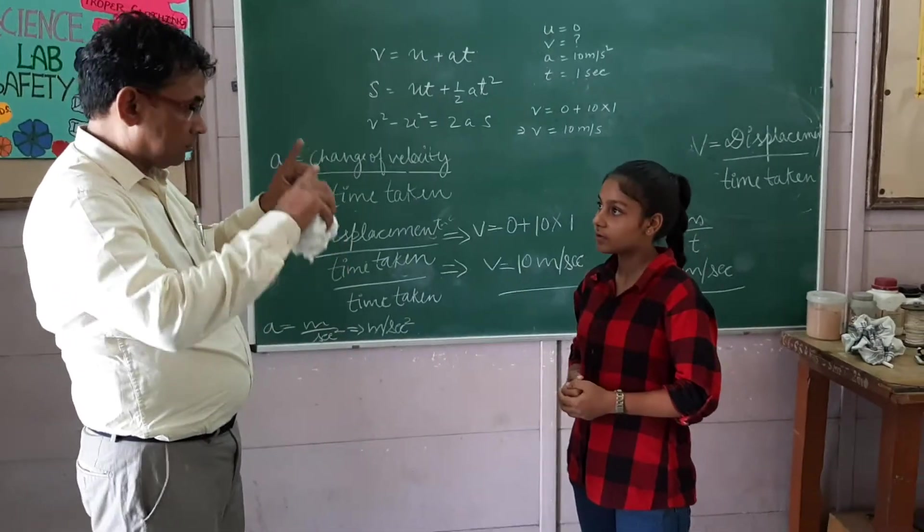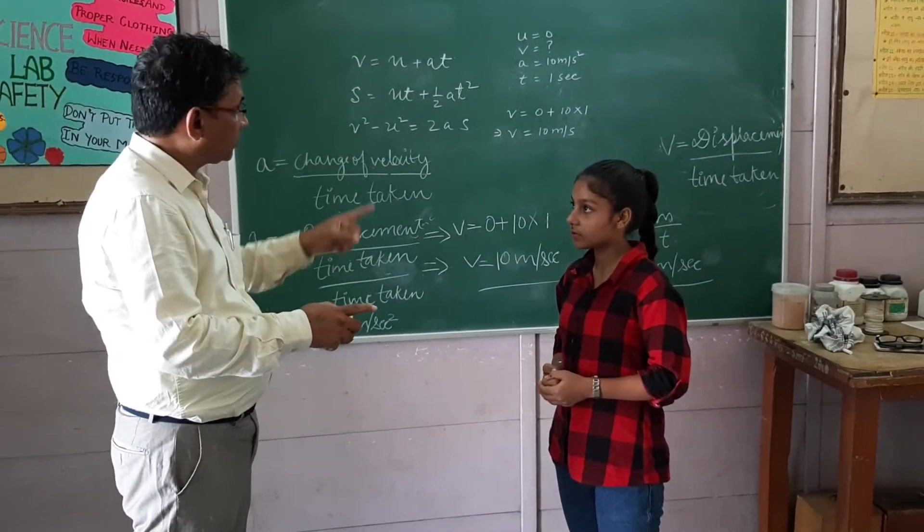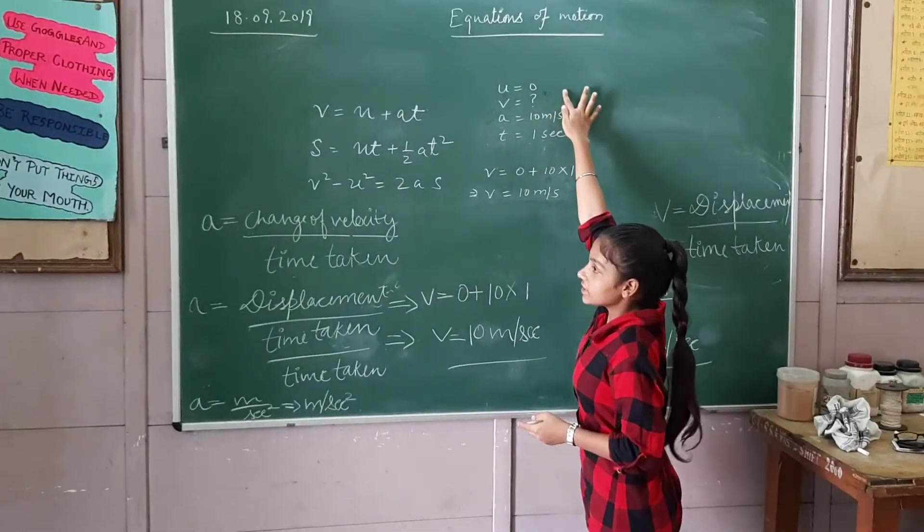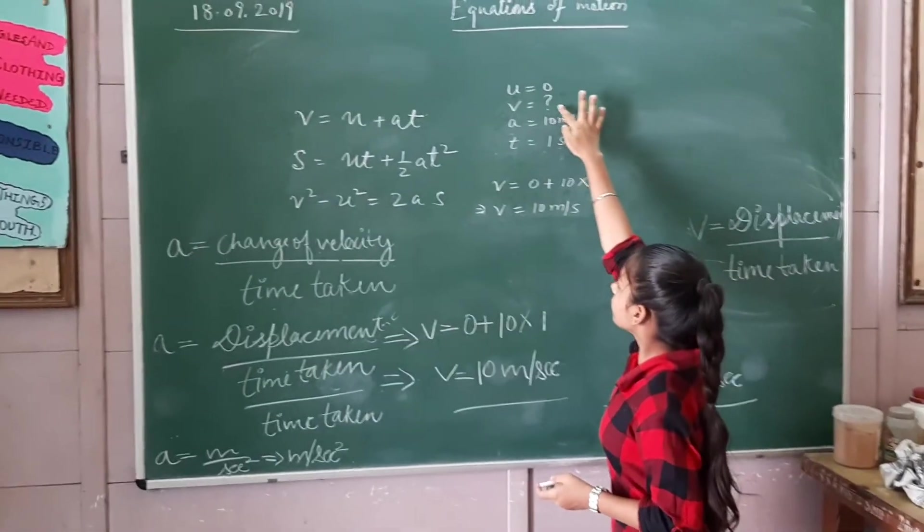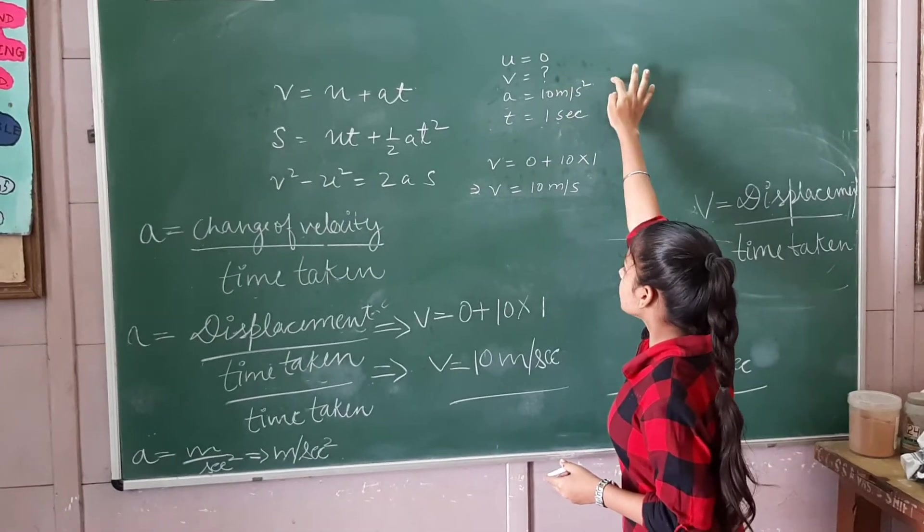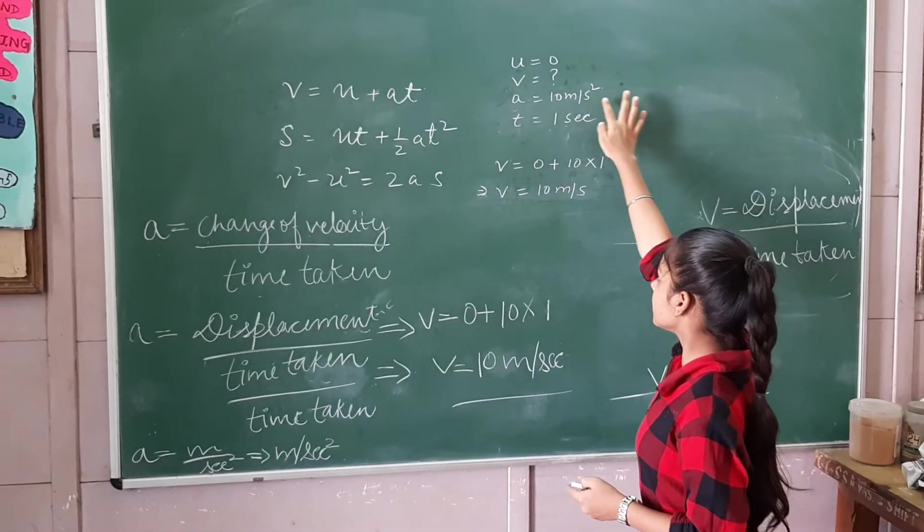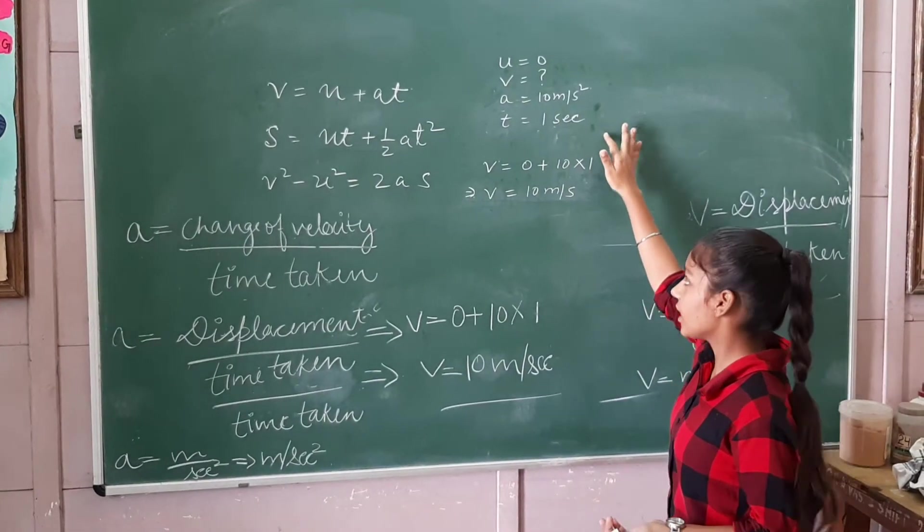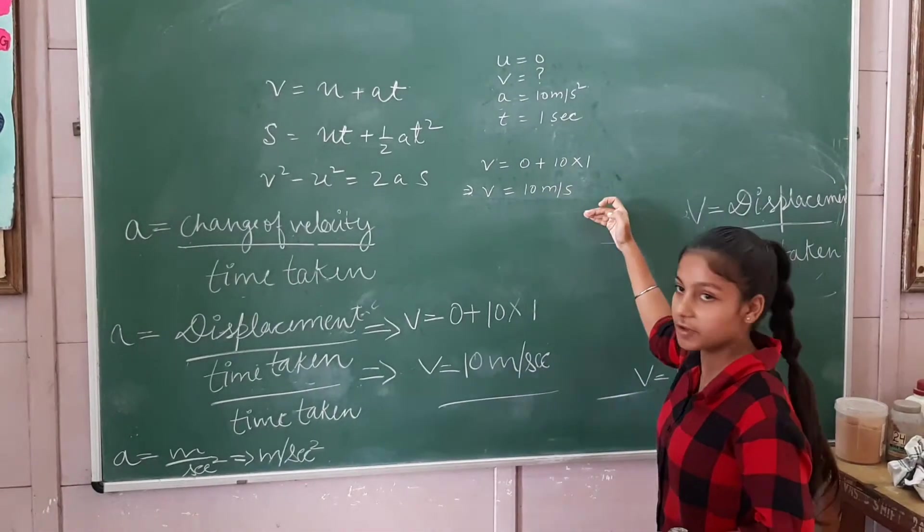Now describe the whole scenario with the help of a board summary. We take initial velocity u = 0, final velocity v we have to find, acceleration a = 10 meters per second squared, and time taken t = 1 second. Now we put the values and get the answer.